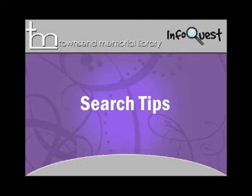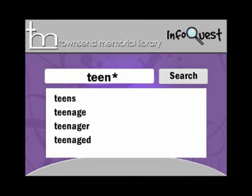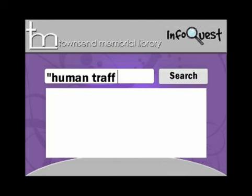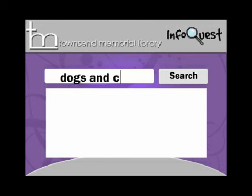Let's go over some search tips. First is truncation: if you search for "teen" with an asterisk at the end, you will get back every possible ending of the word — in this case, teen, teens, teenager, teenaged, etc. If you are searching for a specific phrase, put your search in quotation marks. This will search for exactly the phrase you enter. You can also use Boolean to define your search terms.